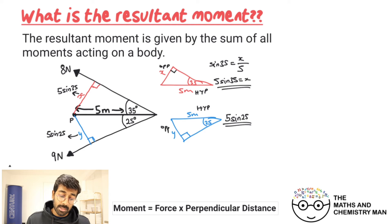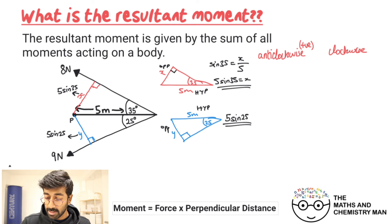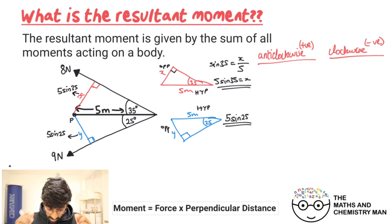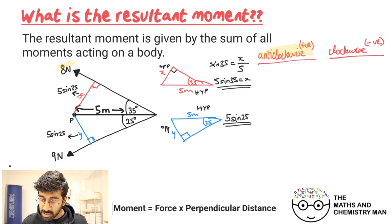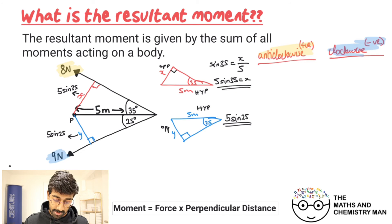We've now got our perpendicular distances. Setting up anti-clockwise as positive and clockwise as negative, the eight Newton force is going anti-clockwise and the nine Newton force is going clockwise. Now let's get cracking with the calculations.